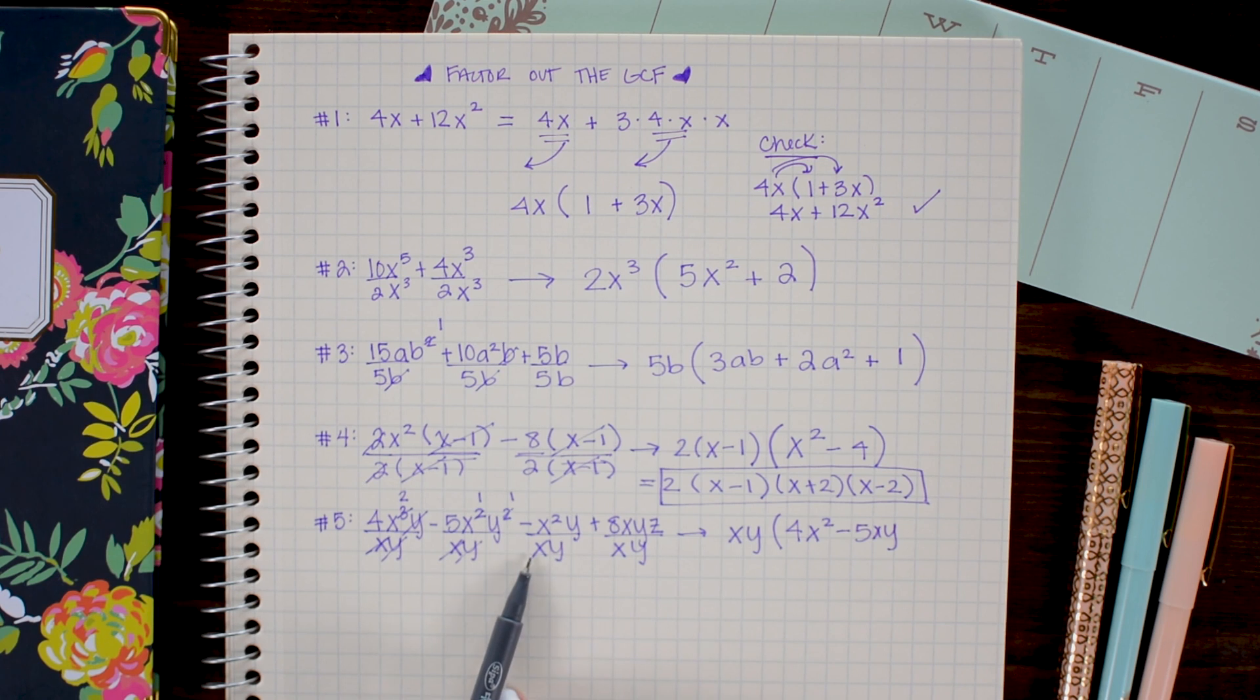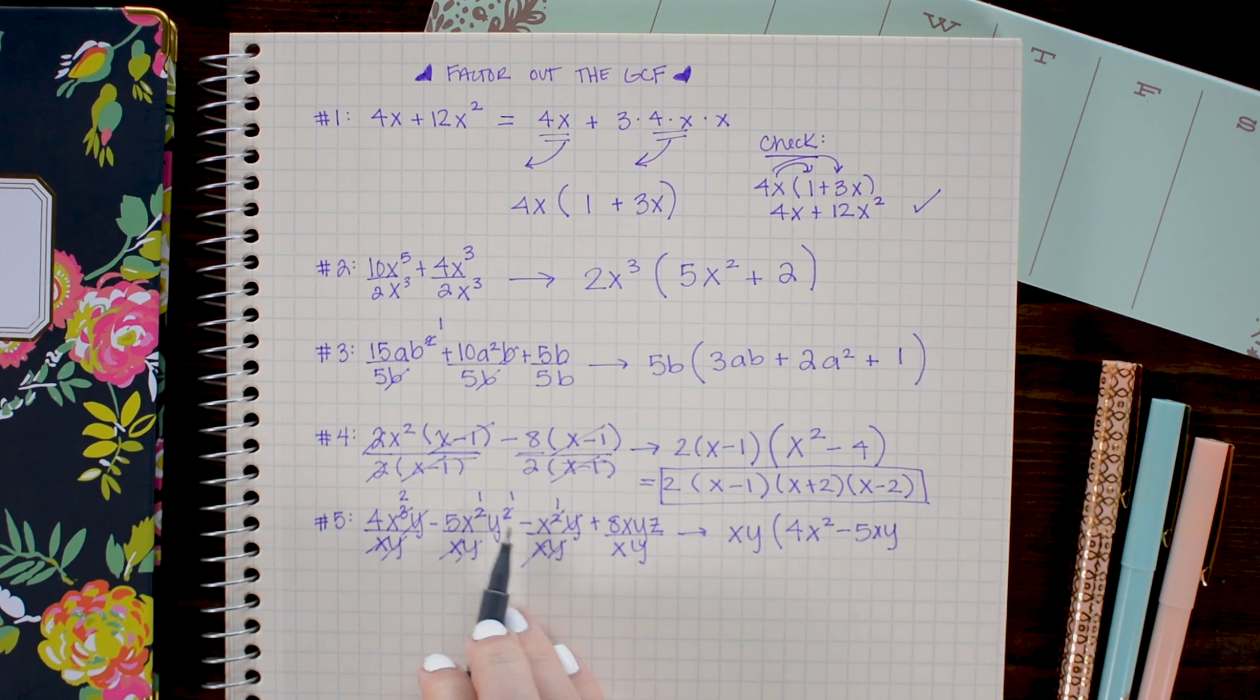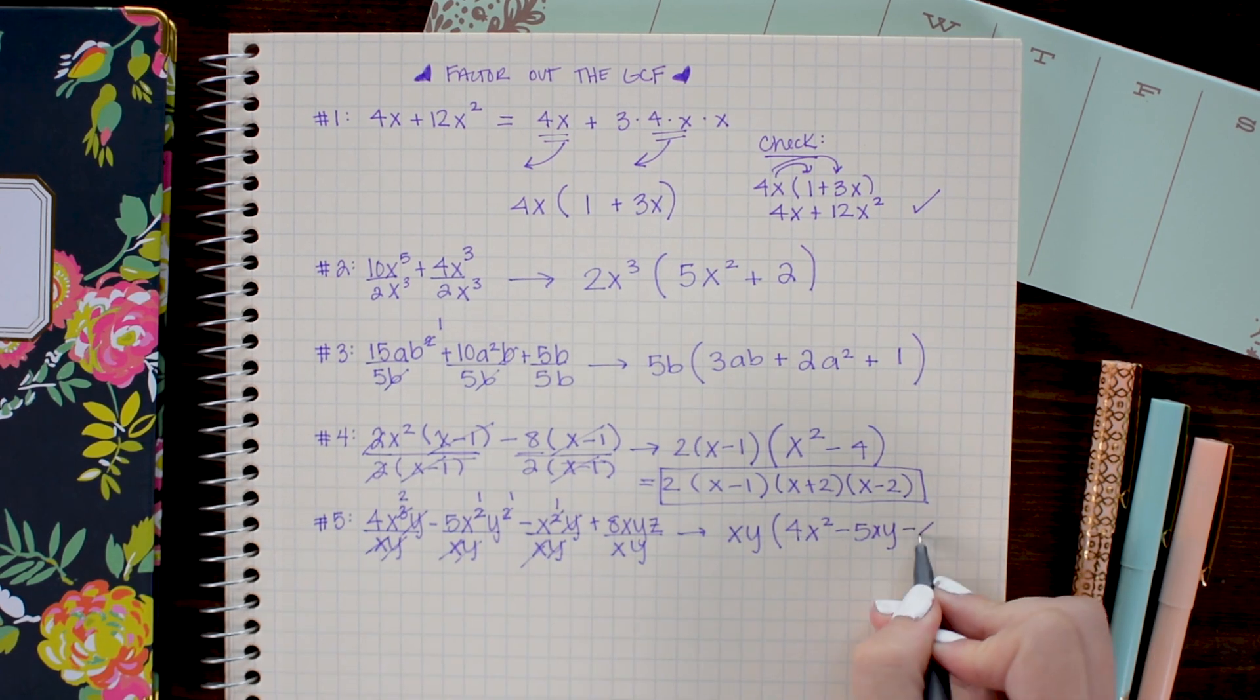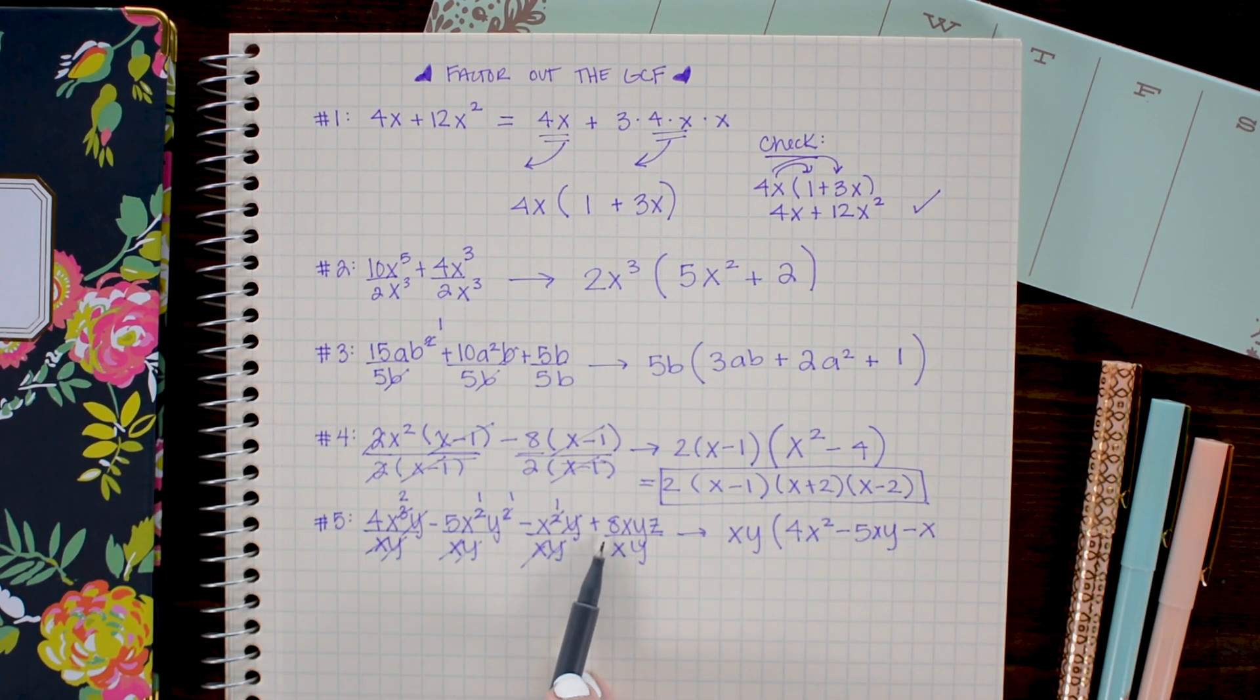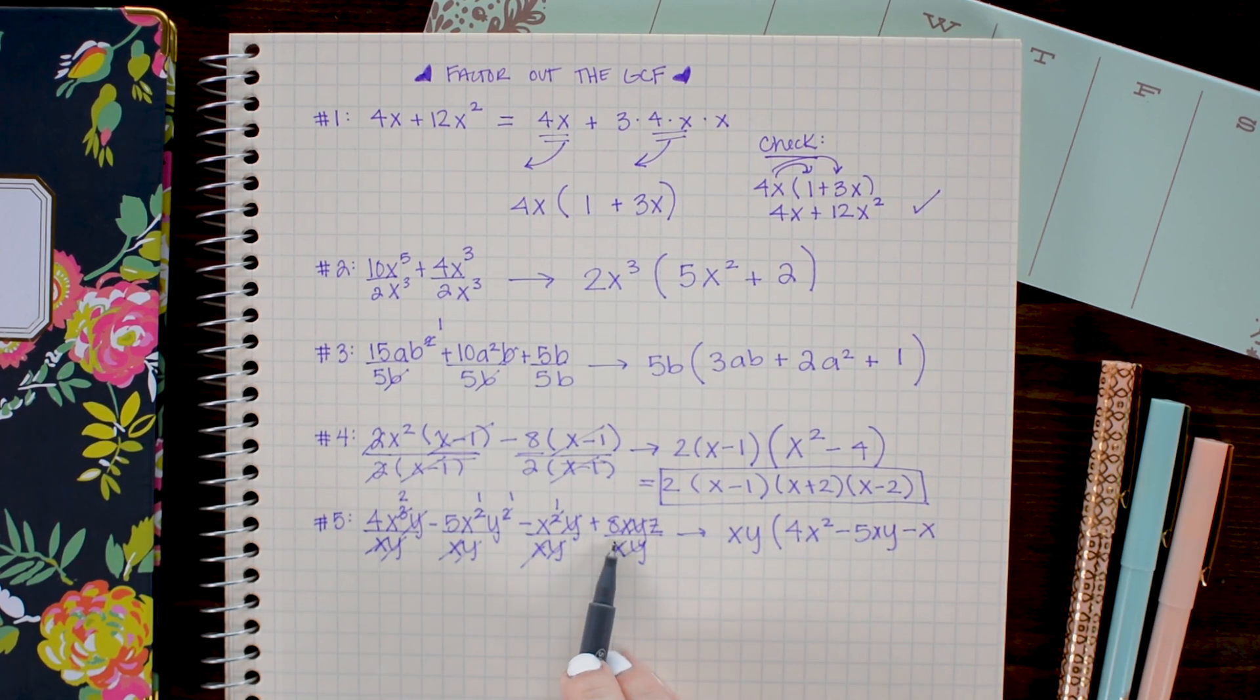Next I can cancel out an x and the y's. This gives me minus x. And lastly here the x and y cancel out. Leaving me positive 8z.